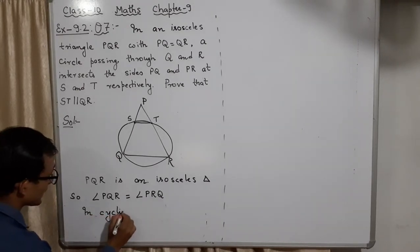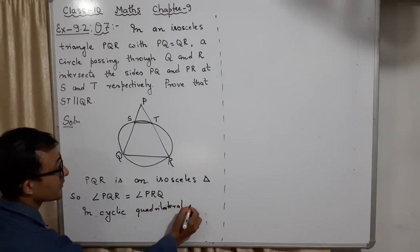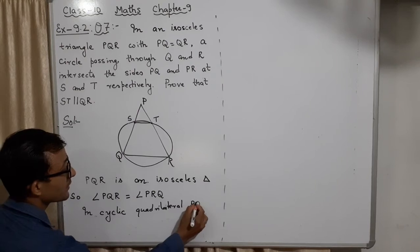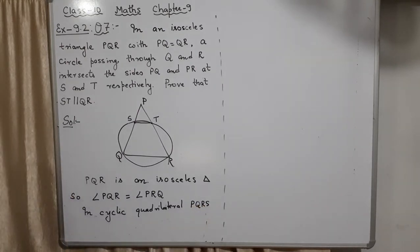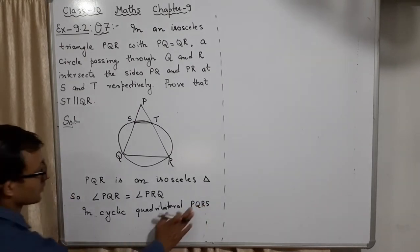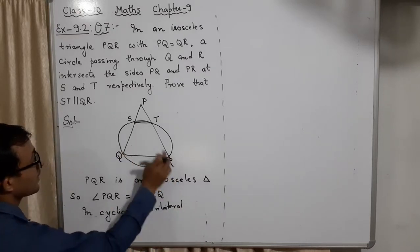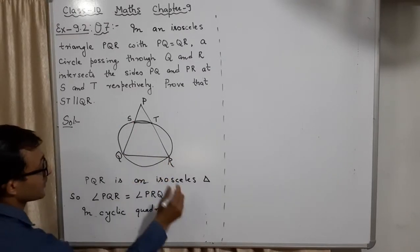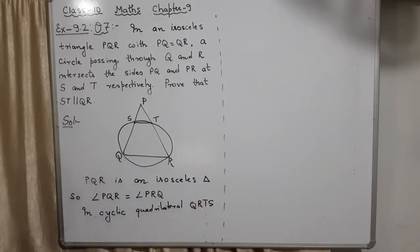Let us see in the cyclic quadrilateral. In this circle, you can see the cyclic quadrilateral SQRT — or you can also read it as QRTS — formed by the points S, Q, R, T on the circle.